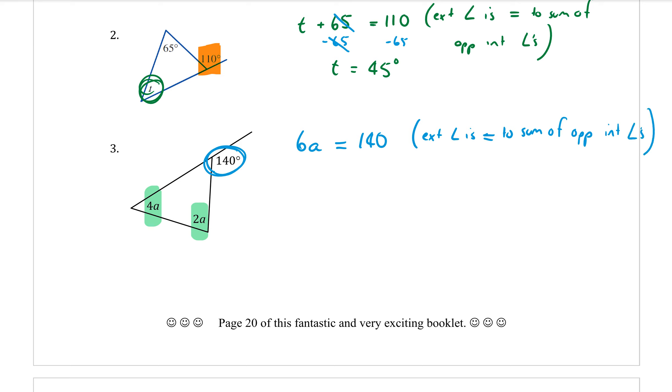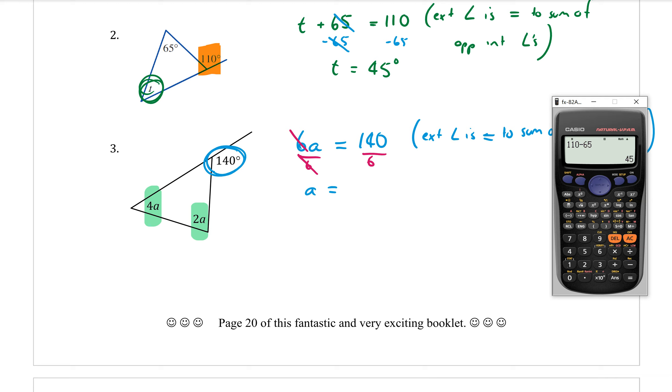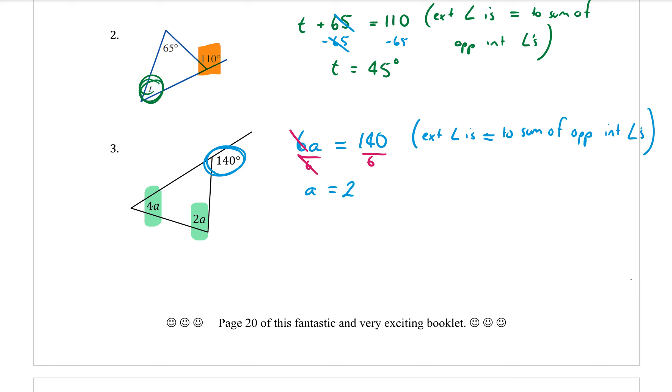Okay, to get the A by itself, I need to divide by 6. So A is equal to 140 divided by 6, and this one becomes a decimal which is 23.3 degrees. We'll just round that to one decimal place.